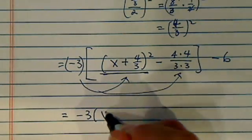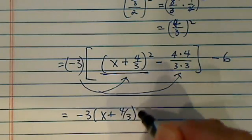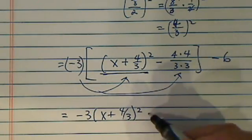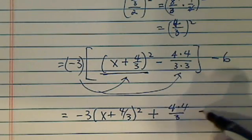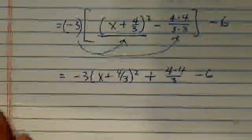So I have minus 3 times x plus 4 over 3 squared. Minus 3 times minus, that gives me a positive, 4 times 4 over 3, and then a minus 6. That's how I get rid of the bracket.